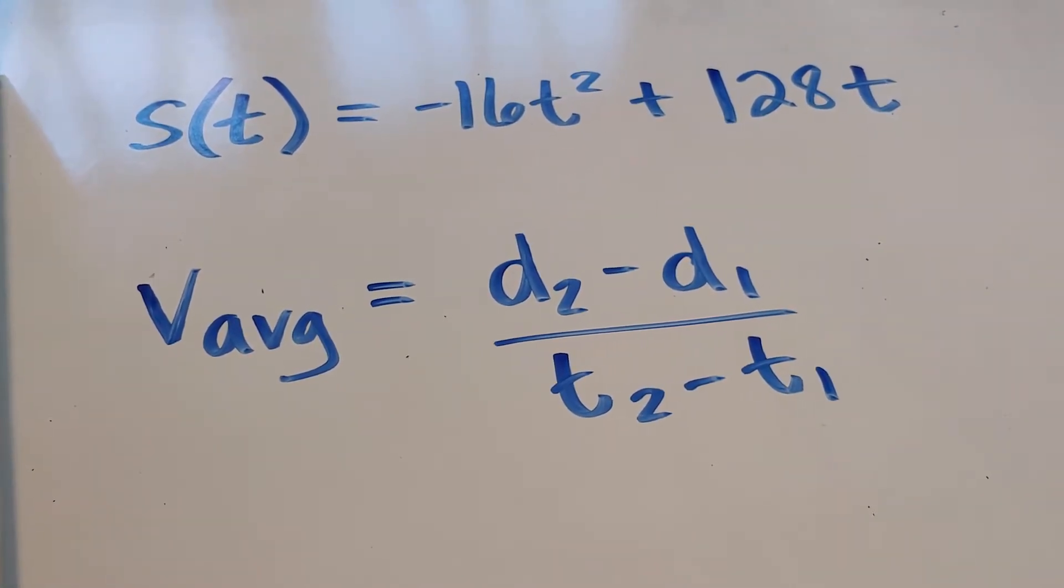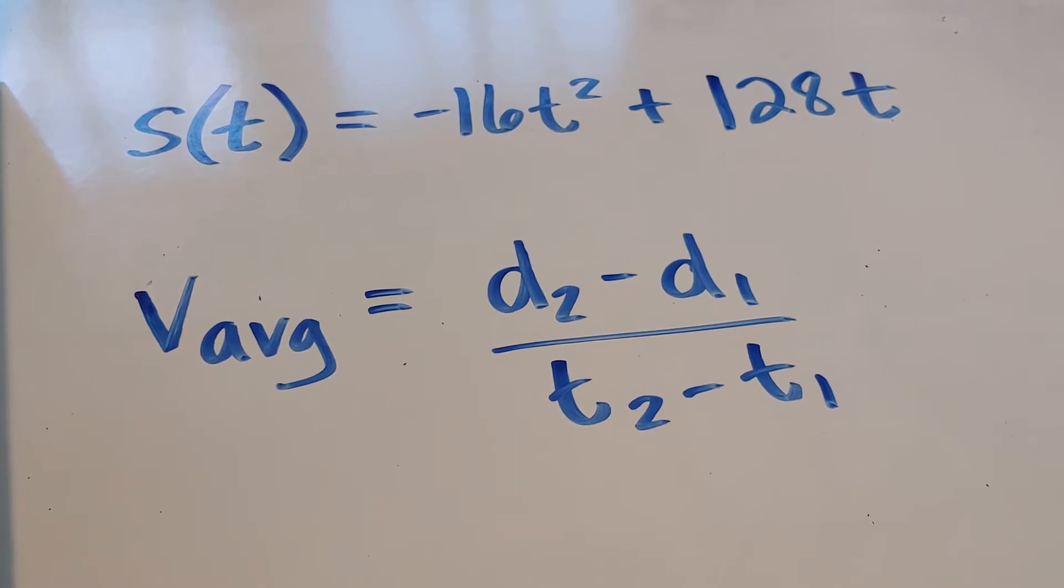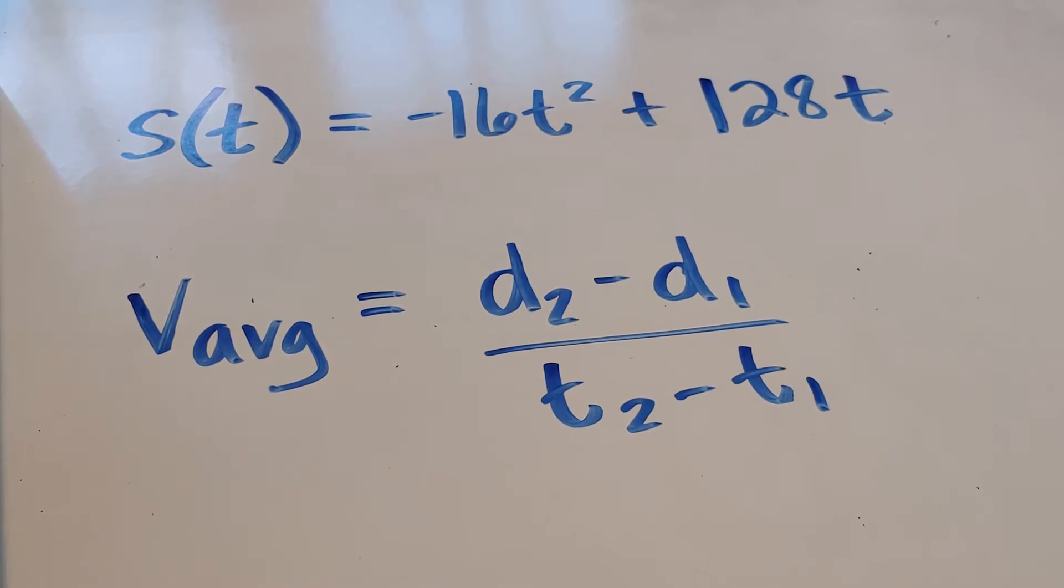So there is our function, negative 16t squared plus 128t. It is a parabola, and it is giving the position for any time given in seconds, and the position is given in feet.